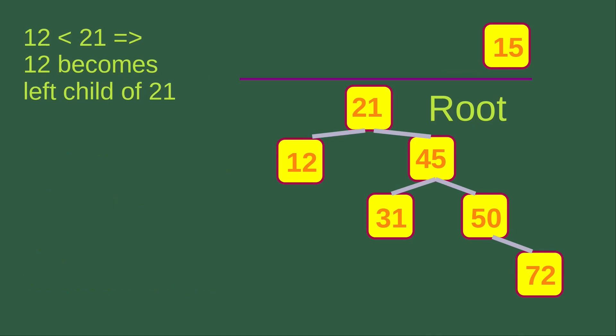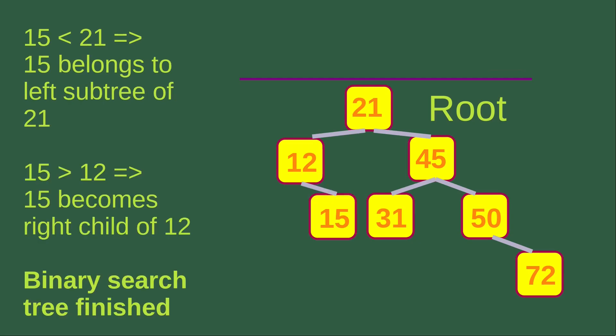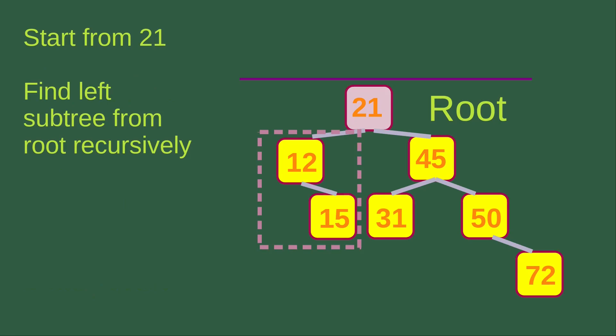The next number is 12. Since 12 is smaller than 21, it becomes the left child of 21. The final element is 15. Since 15 is smaller than 21, it belongs to the left subtree of 21. And since 15 is larger than 12, it becomes the right child of 12. After handling all the elements, the binary search tree is finished, and we can perform the traversal process.